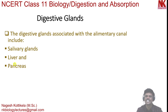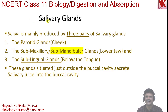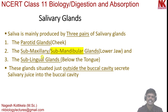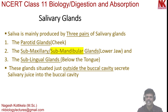Saliva is mainly produced by three pairs of salivary glands. These three pairs are: the parotid glands, the sub-maxillary or sub-mandibular glands, and the sub-lingual glands. Among the three pairs of glands, the parotid glands are the largest glands and sub-lingual glands are the smallest glands.